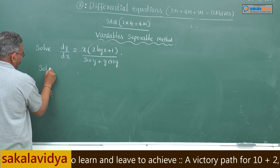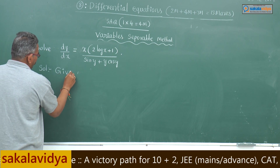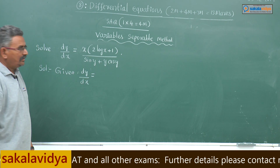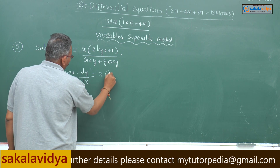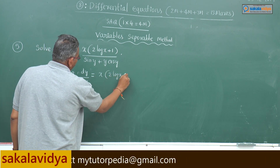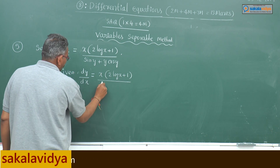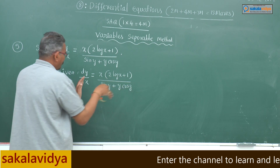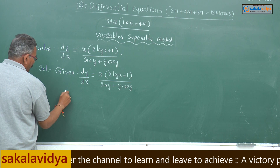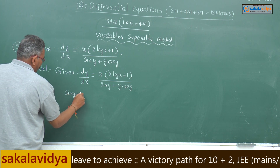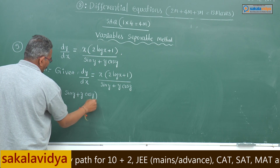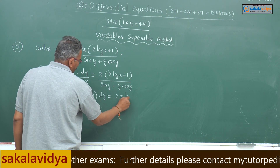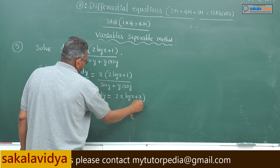Given: dy/dx equals x times (2 log x plus 1) upon (sin y plus y cos y). Cross multiply: (sin y plus y cos y) dy equals (2x log x plus x) dx.